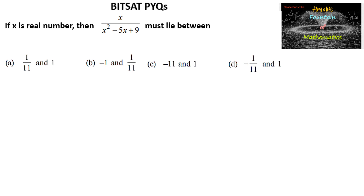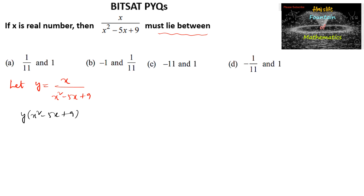If x is a real number, then x/(x² - 5x + 9) must lie between certain values — we need to find the range of this function. Let y = x/(x² - 5x + 9). By cross multiplication, y(x² - 5x + 9) = x, which gives yx² - 5yx + 9y - x = 0.